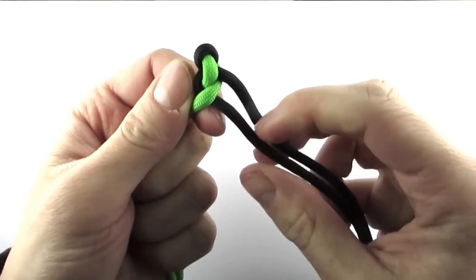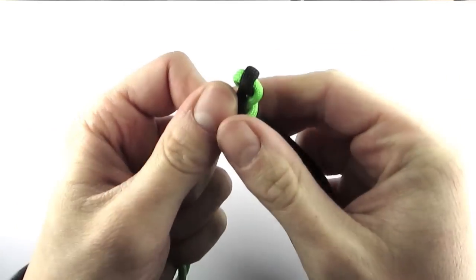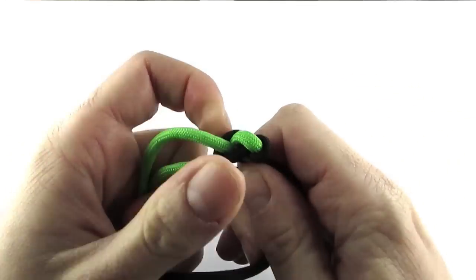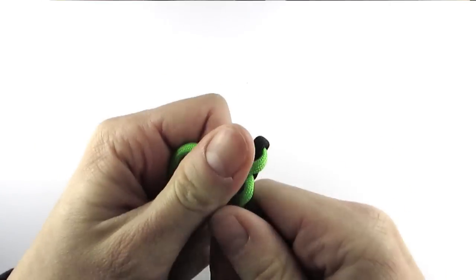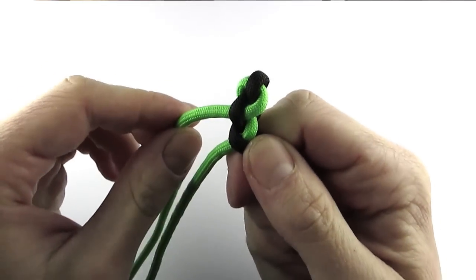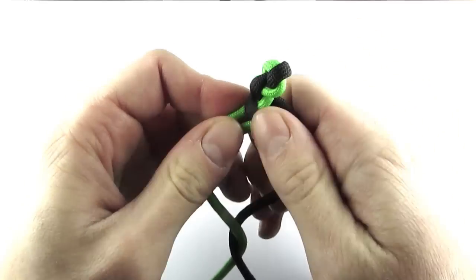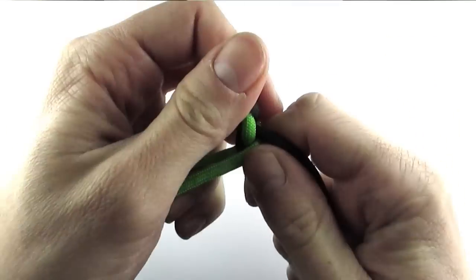Then we're going to take the top right cord again, go through the left cords and back to the bottom of the right hand. Then we take the left top cord, through the right cords and to the bottom of the left side.